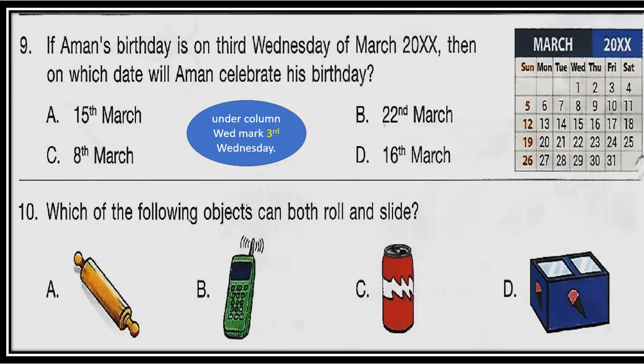Question 10: Look at the options — you have to choose an object which can both roll and slide.